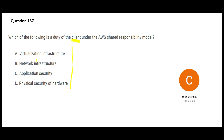Options A and B are both wrong. Virtualization infrastructure — meaning usage of hypervisor etc. — controlling the hypervisor is something AWS will do for you. Similarly, network infrastructure: AWS might be using Cisco or another company in the background. Option D talks about physical security of the hardware — this is also wrong, because AWS will take care of that, like putting a security watchman outside the data center.